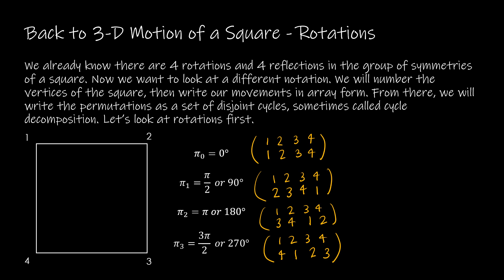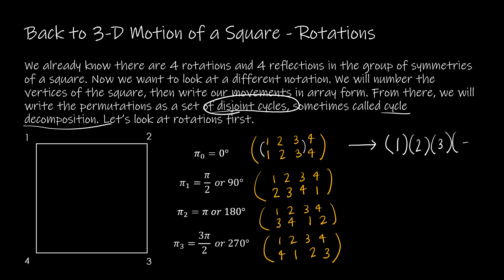That's the array form. What we need in order to use Polya's theorem is to write each permutation as a product of disjoint cycles, sometimes called cycle decomposition. Here's how it works: I start with a number, and once I get back to that number, I close the parenthesis. For zero degrees, 1 maps to 1, so I close the parenthesis right away. Same for 2, 3, and 4 — giving four one-cycles.